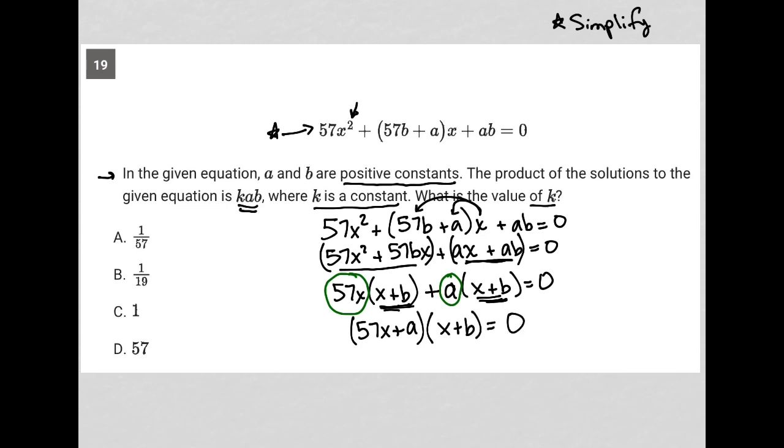So now I can set each of these binomials separately equal to zero. So I can have 57X plus A equals zero. And I can have X plus B equals zero. So let's solve these separately.